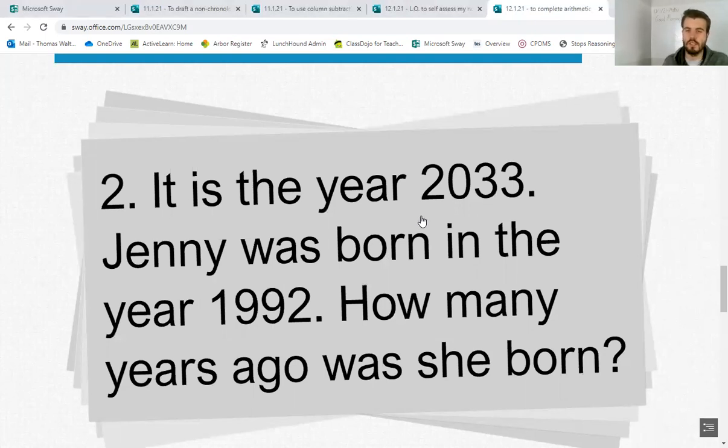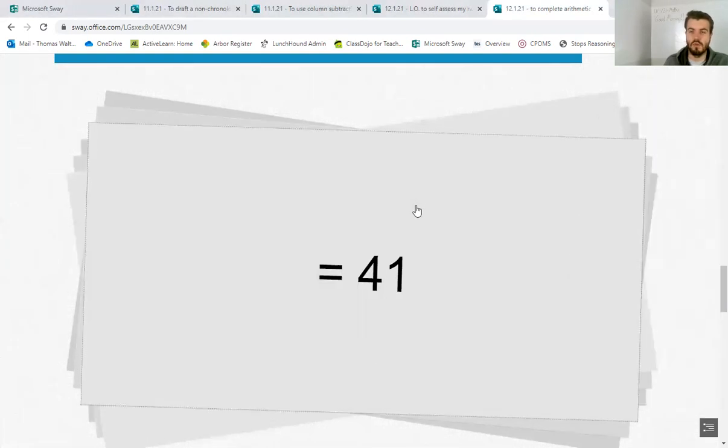If you can't steal from the next column because there's a zero there, steal from the column across, move it across, and then move it across again. I'm sure you can do that. The answer to this one is 41.